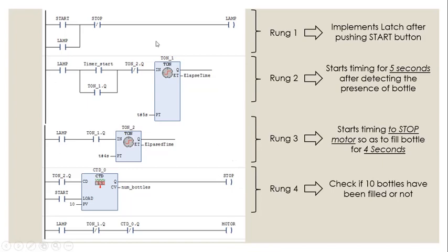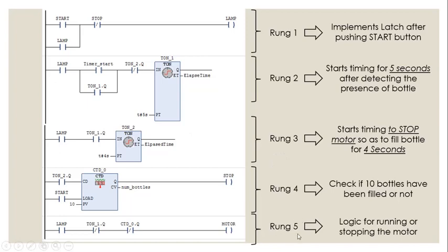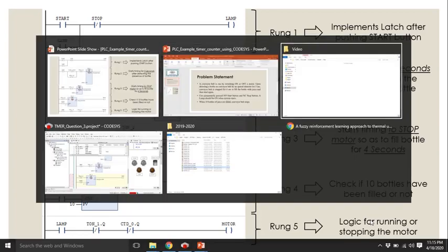If 10 bottles have been filled, the counter's Q bit will enable the stop input - giving a high input to the stop button path - and this path will be broken, turning the lamp off. If the lamp is off, the motor will also be turned off. Simultaneously both timers will also be turned off because they are connected in series with the lamp in rungs two and three. Rung five makes sure that when 10 bottles are filled, the motor and the whole system are stopped.